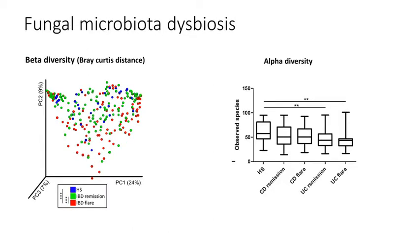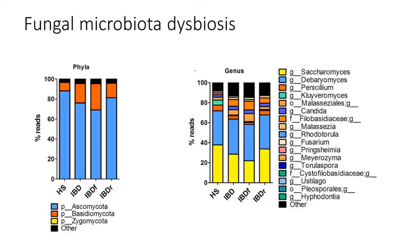Regarding the fungal microbiota, we identified a dysbiosis in IBD, although weaker than for bacterial microbiota. We also observed a decrease in biodiversity, but only in patients with ulcerative colitis. In terms of composition, the fungal microbiota was dominated by two phyla: the Ascomycota and the Basidiomycota.